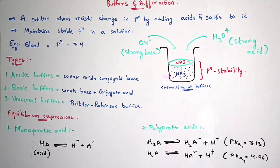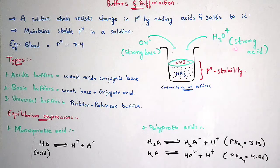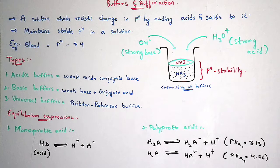For example, if you see this diagram it consists of NH4+ and NH3 solution. Normally if you take a normal solution the pH is not stable. When you add salts and acids — salts act as OH minus — and if you add a strong acid to that solution then the pH gets stable. So the stability of this pH takes place because of the buffers. It maintains stable pH in a solution.